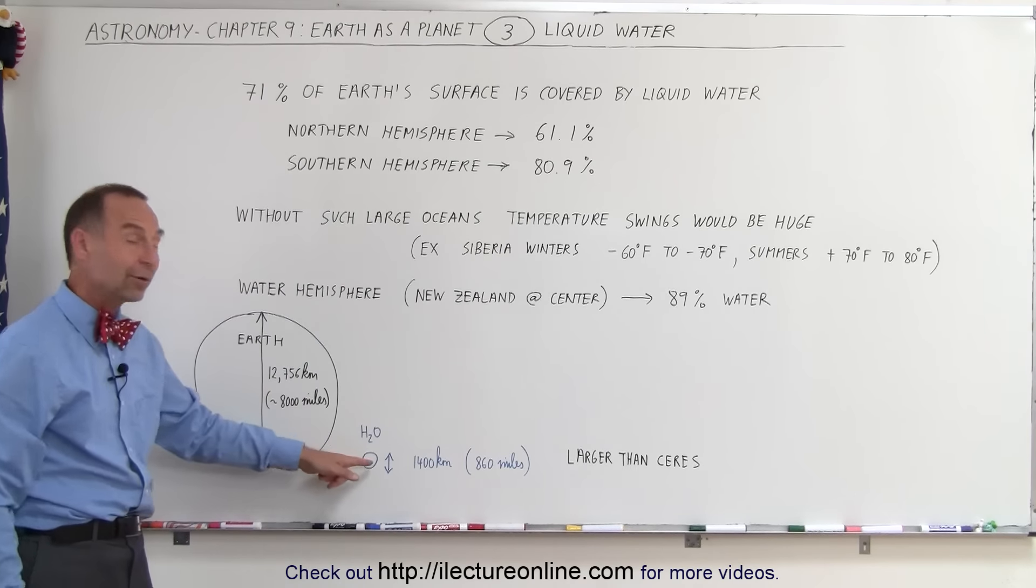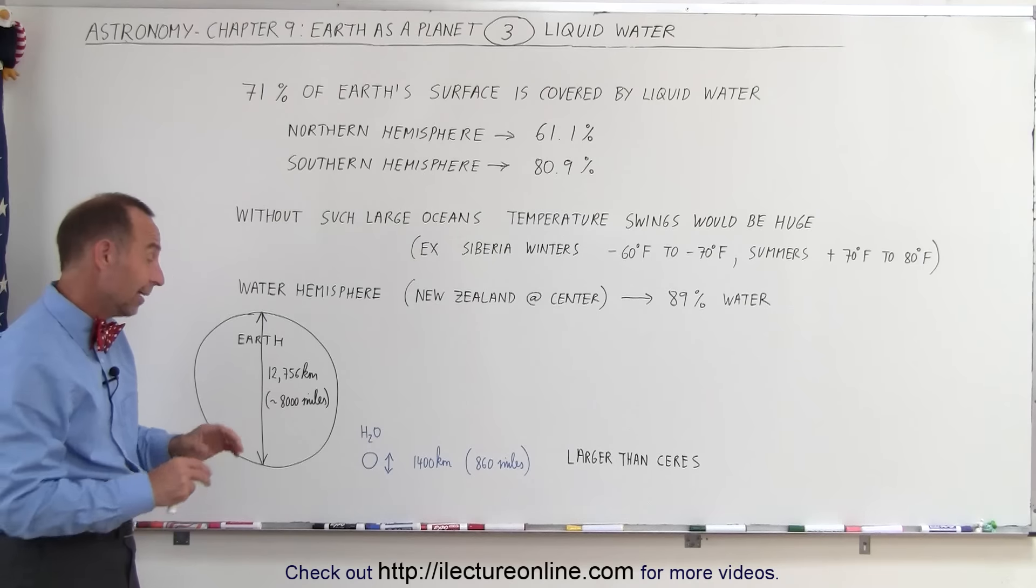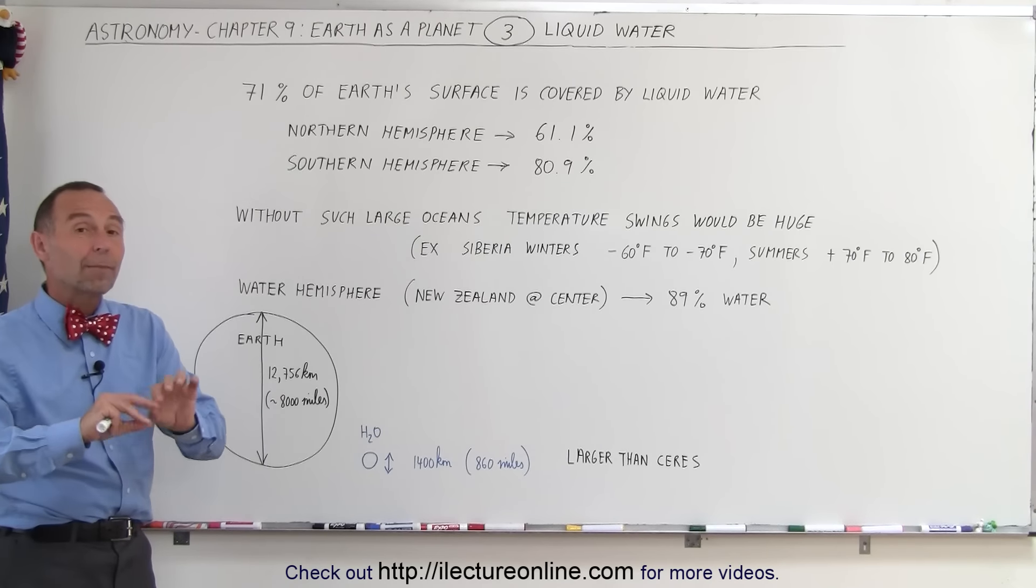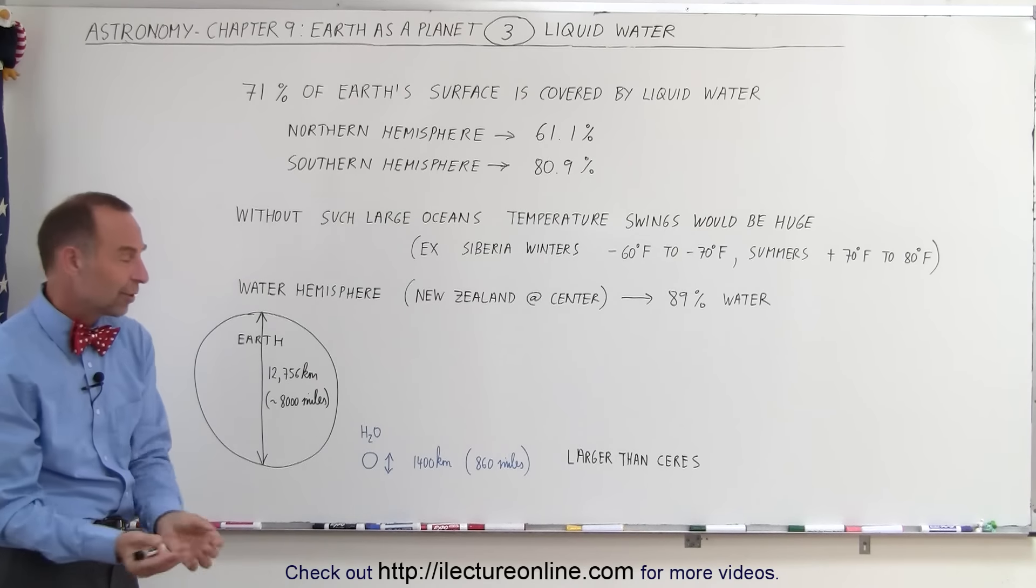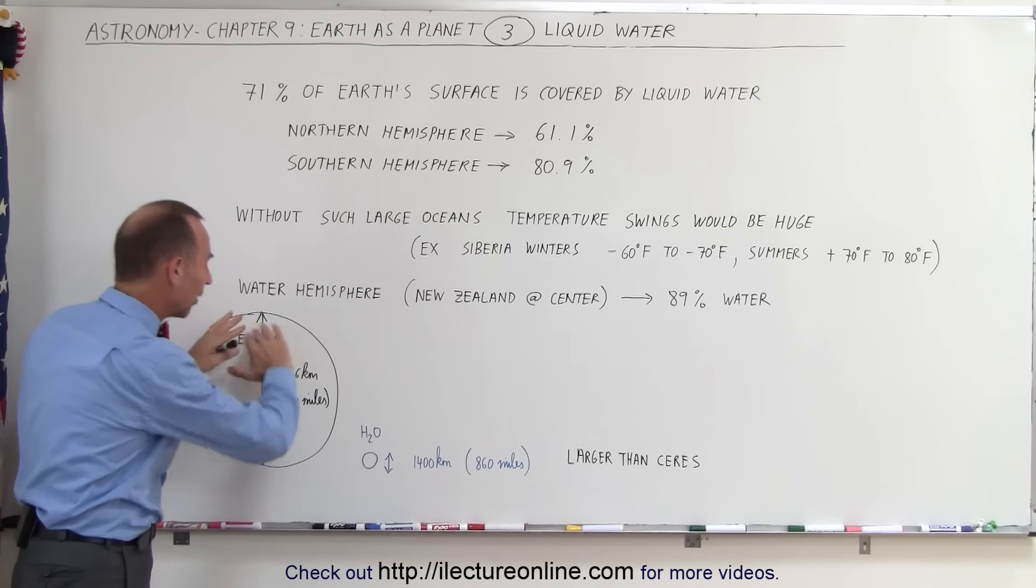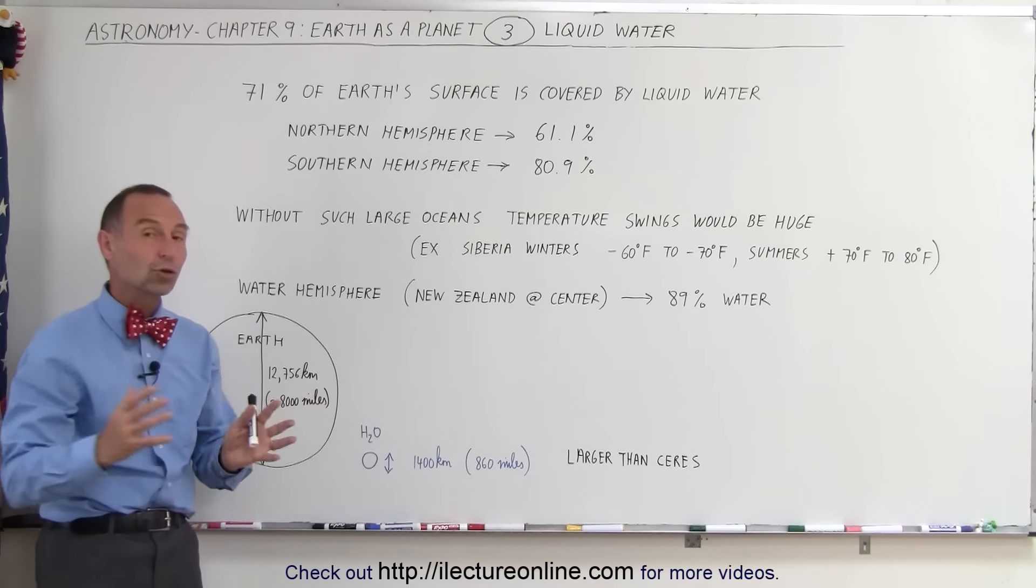You look at this and go, wow, the Earth does not have a lot of water. Thing is that water is primarily distributed over the surface of the Earth. And so if you took this amount of water and spread it over, that's why you have these huge oceans.